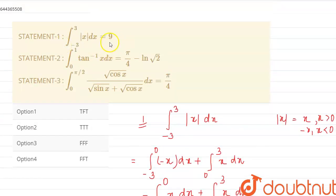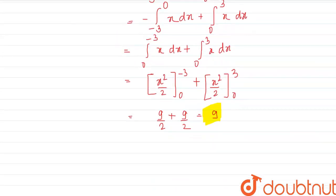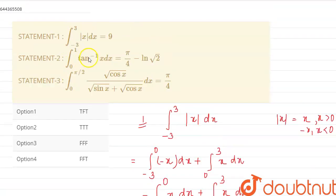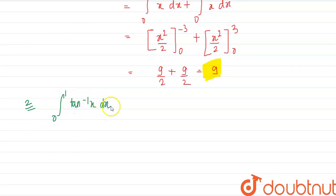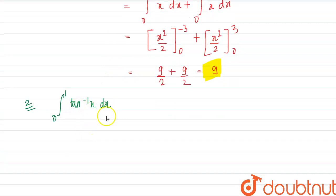Our statement one gives a value of nine, so statement one is true. Now for statement two: we need to evaluate the integral from zero to one of tan⁻¹x dx. For that, we will use integration by parts.